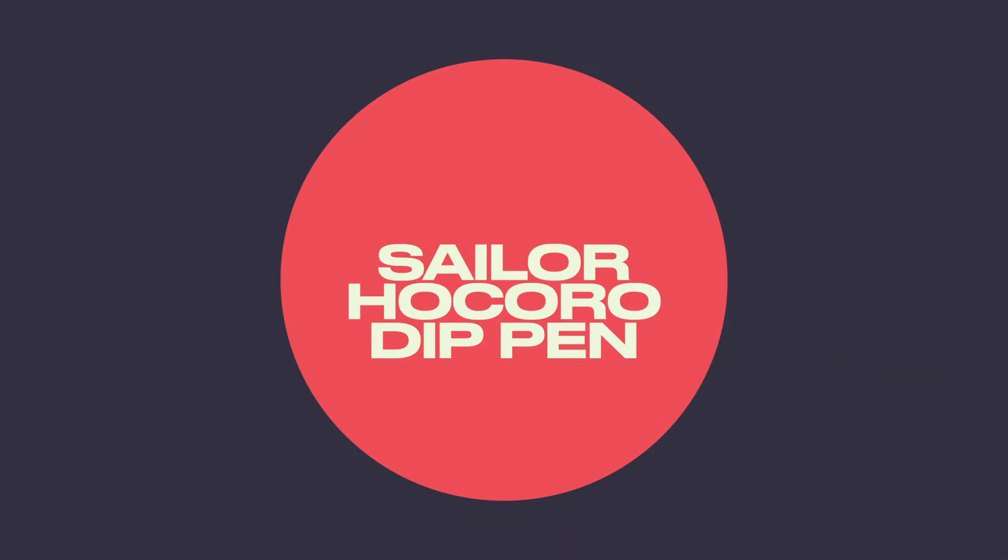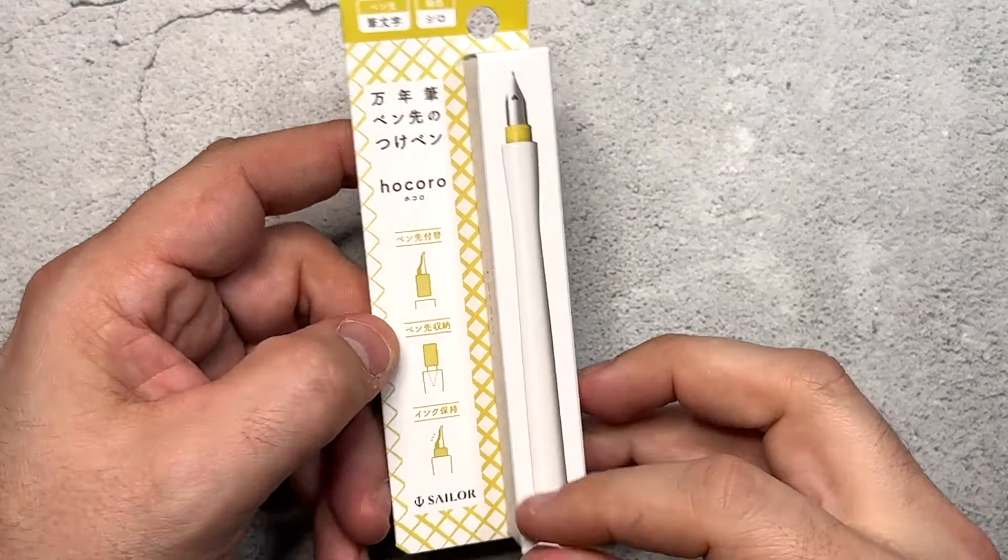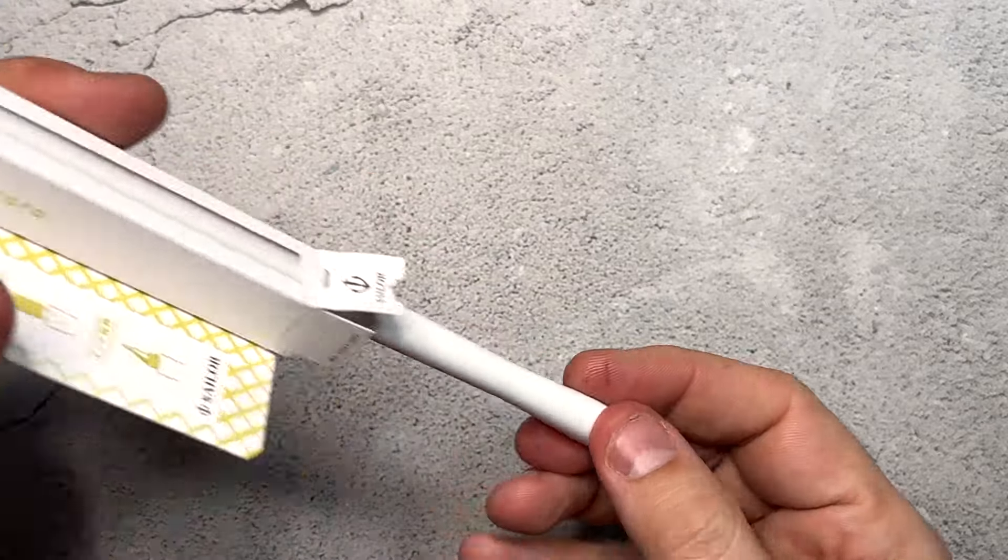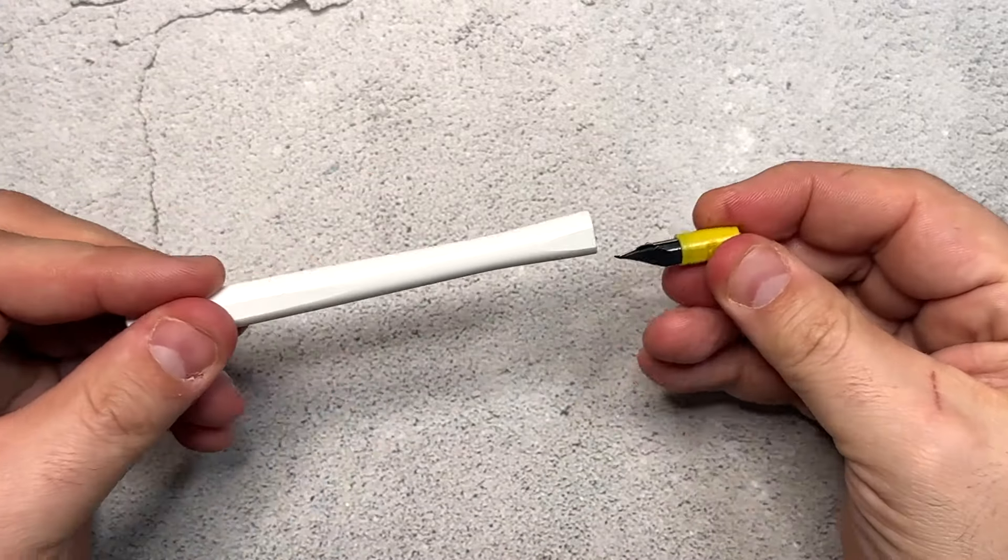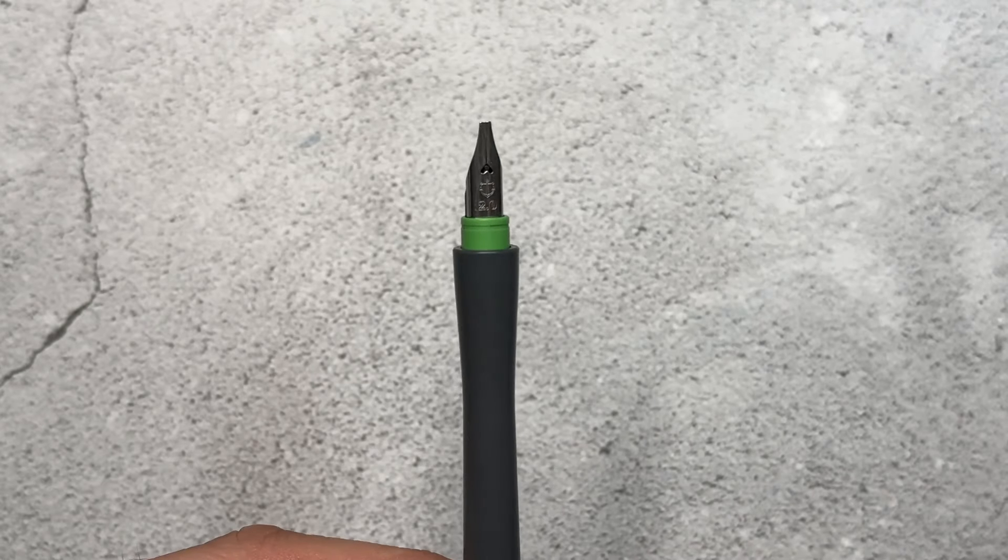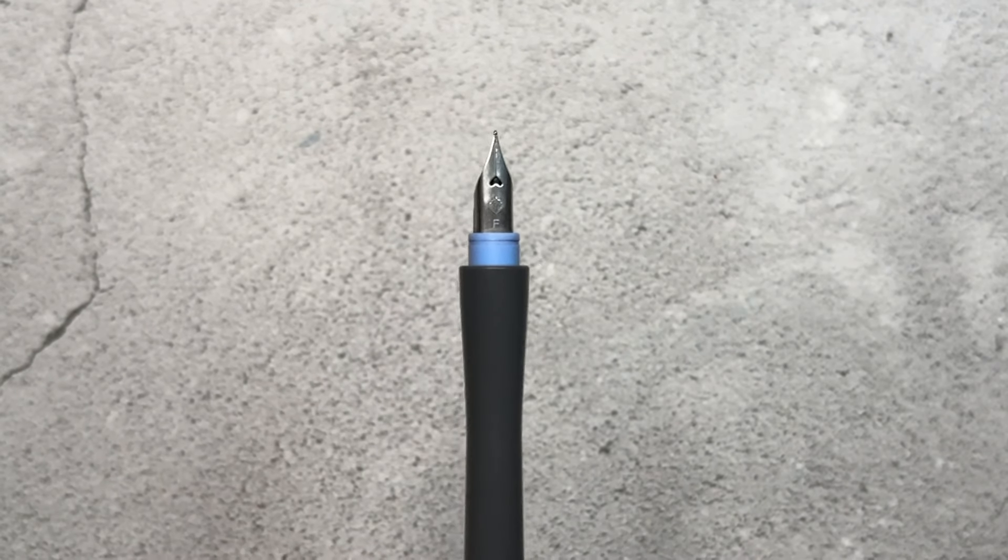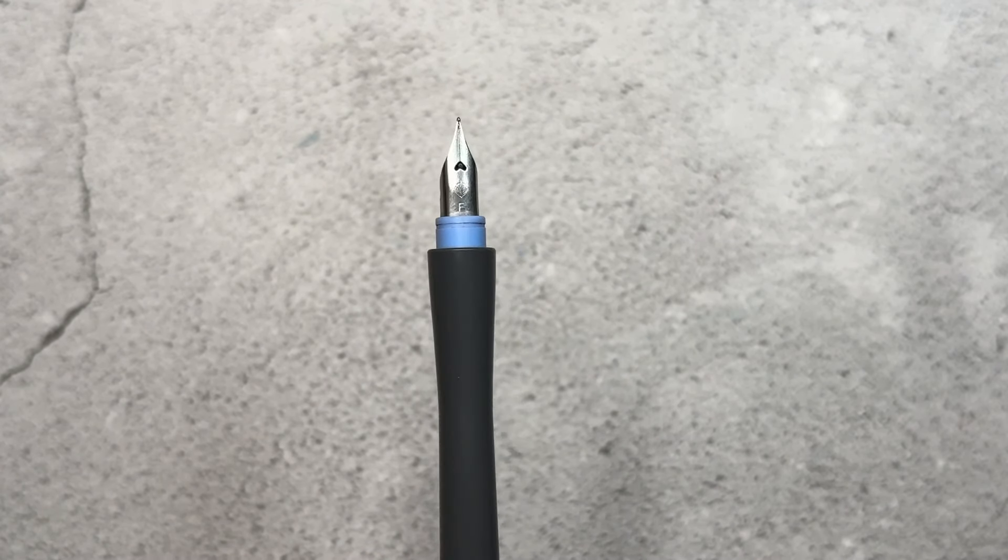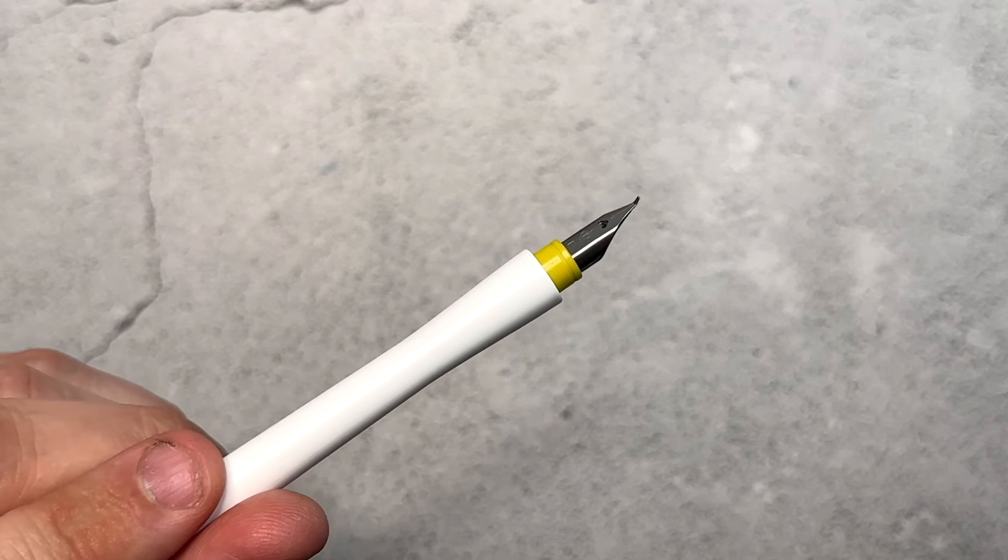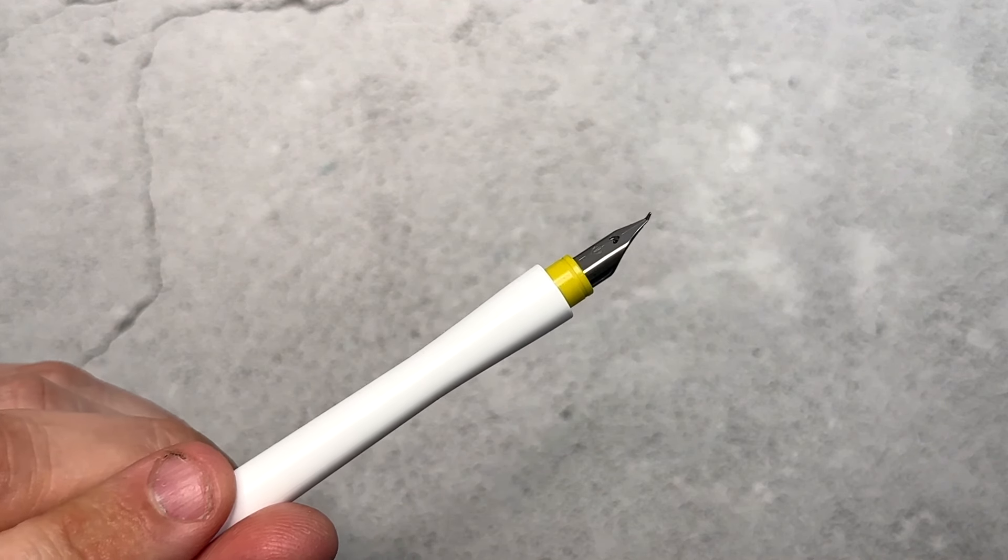All right and the last one we're going to be looking at is Sailor. This is the Hokoro. I have one of these pens. What's cool about these pens is that the nibs can be interchangeable. So I have some other ones I've purchased over time which are really cool. I love the fact that you can just fit it to whatever body you want. What's special about this one for me is that it has a Fude nib.